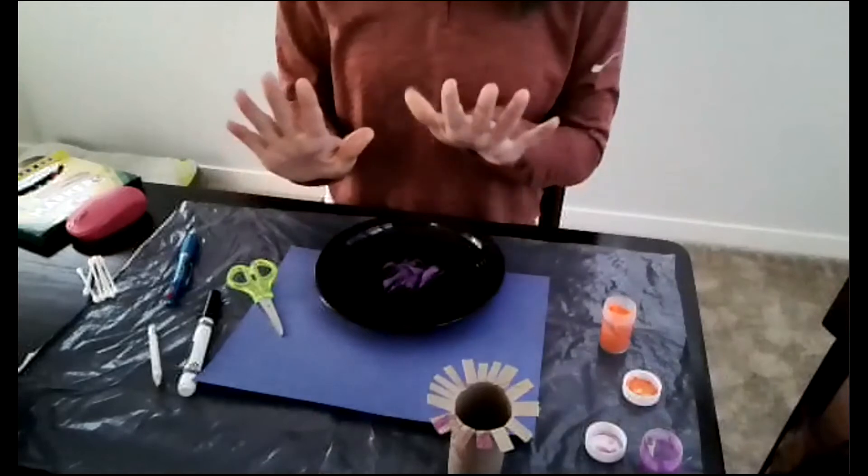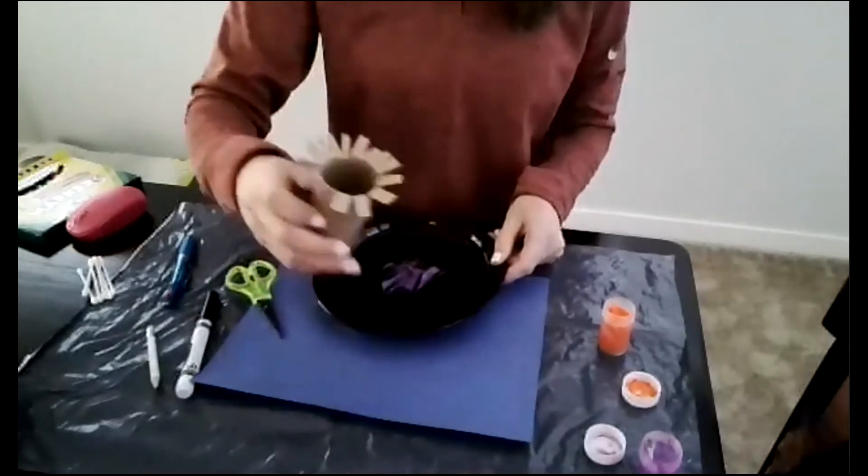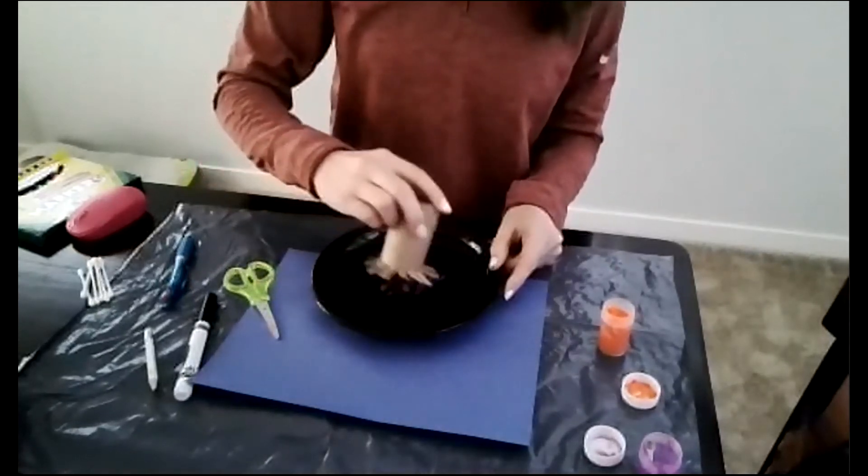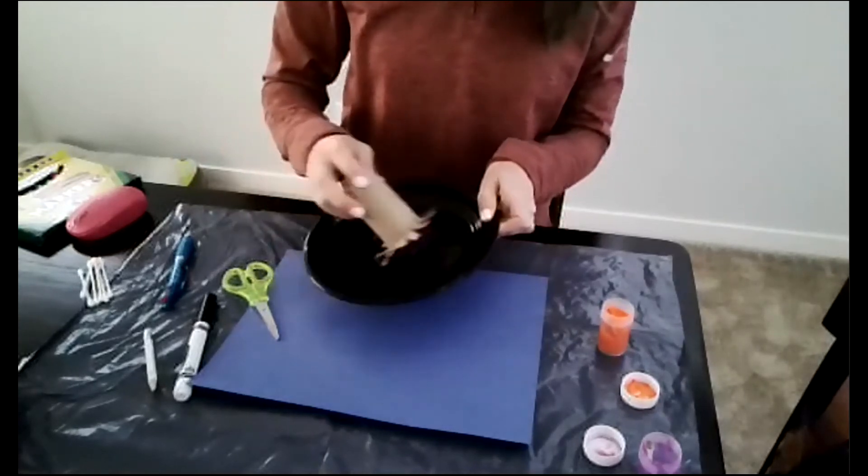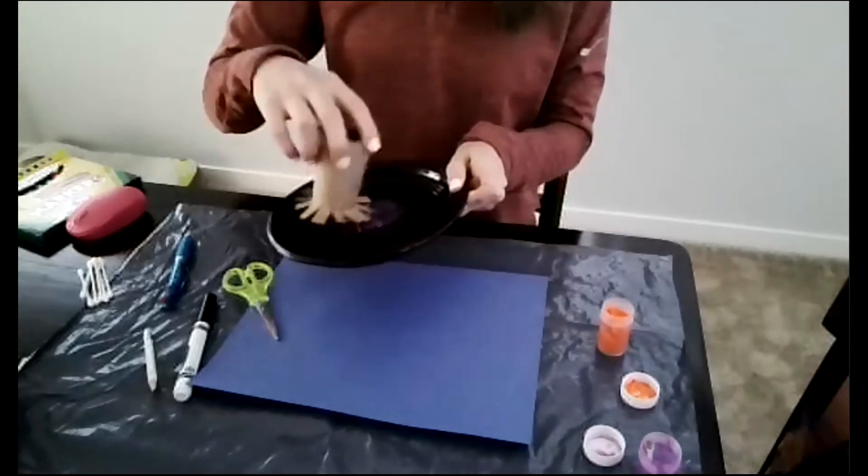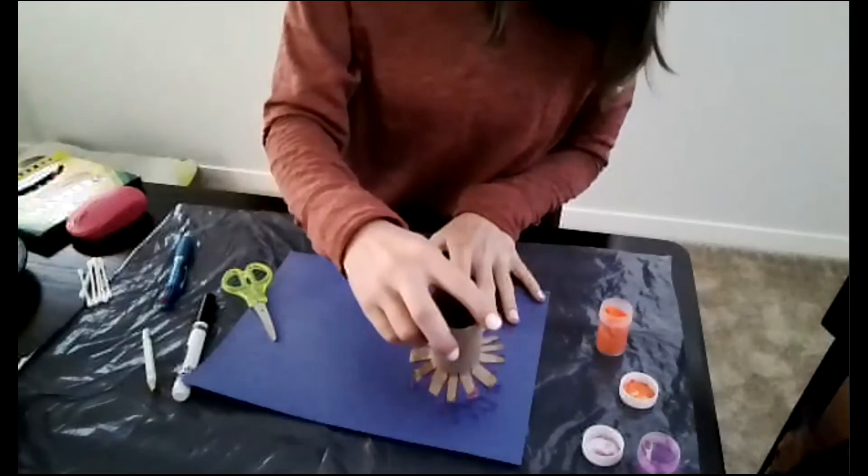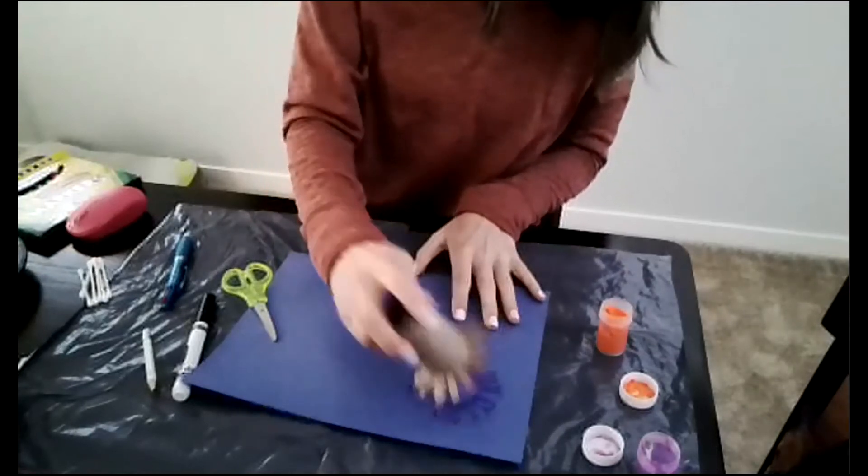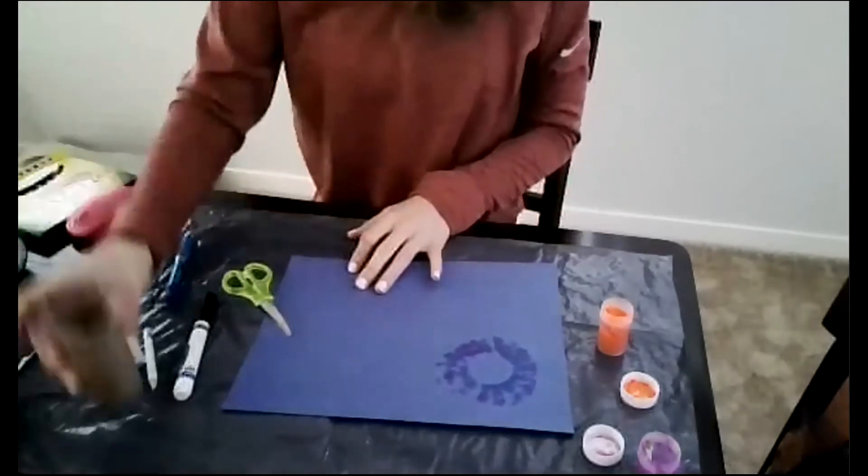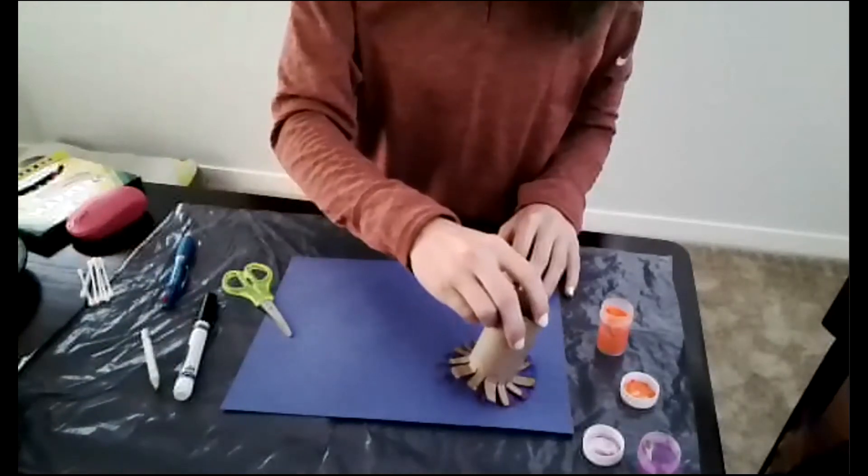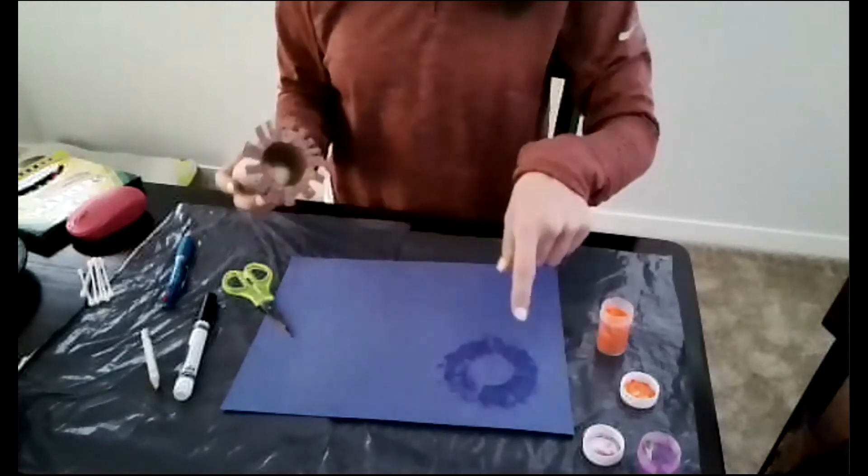If your child does not like getting paint on their hands make sure you have a paper towel or a washcloth nearby so that they can wipe their hands if they get some on there. So I'm just going to make sure all of my petals are getting paint on them. And then stamp it down on the paper. So you see I kind of had to wiggle and turn my roll all the way around so that it would make the full flower shape.